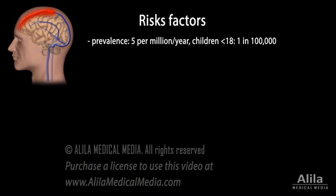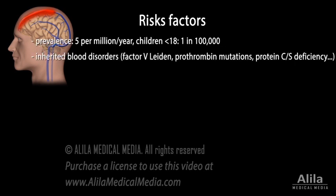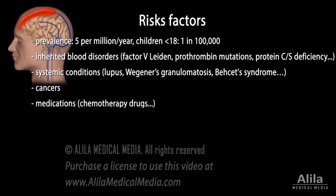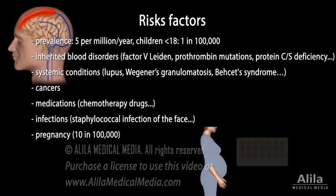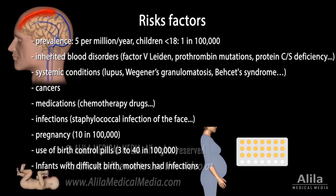CVST is a rare type of stroke that can affect all age groups, including infants. Risk factors include having inherited blood disorders, systemic conditions, cancers, use of certain medications, and some infections. Women of reproductive age are more at risk due to pregnancy and use of birth control pills. Infants with difficult birth or whose mothers had certain infections are also more vulnerable.